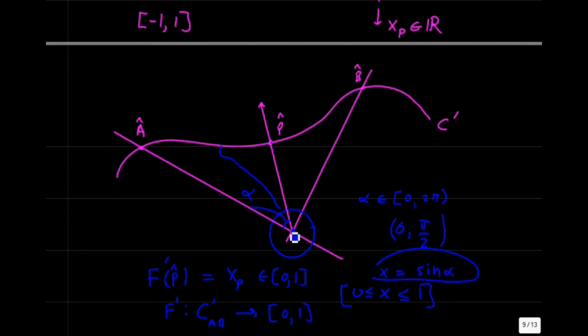We do not need any epsilons and deltas to do this — we just need the notion of a continuous curve. It can be made rigorous by looking at the topology of such curves with a definition of continuity between topological spaces. Maybe we'll talk about that in another video.